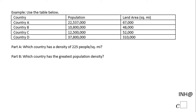Welcome back to C-square. In this example we have a table with four countries: A, B, C, and D. The population is given for each country in the second column, and the land area for each country is given in the third column. We need to answer part a — which country has a density of 225 people per square mile.